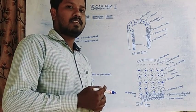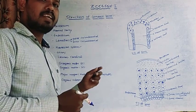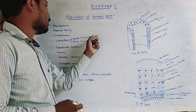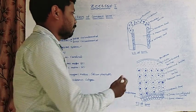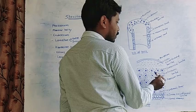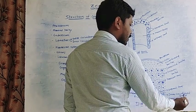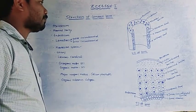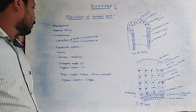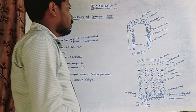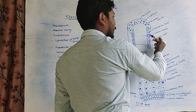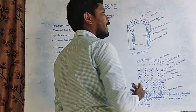Between the periosteum and endosteum, lamellae are present. These lamellae are divided into two major types: outer circumferential lamellae, found at the periphery of the bone, and inner circumferential lamellae. The concentric lamellae are connected with the Haversian canal.